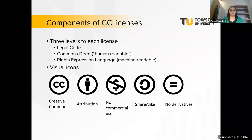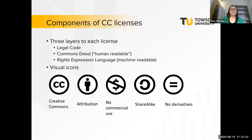The rights expression language — the machine-readable layer — is like metadata assigned to the license. If you have a print item it's not relevant, but if you're putting something on a website it can be helpful. Google can tell if something is Creative Commons licensed as long as the machine-readable version is included. There are also visual icons that are helpful for interpreting what a license means.